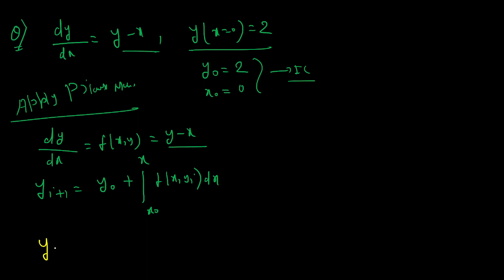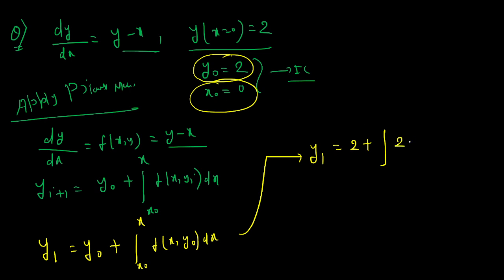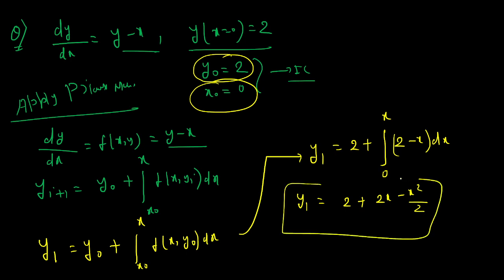To calculate y₁: y₁ = y₀ + integral from x₀ to x of f(x, y₀) dx. Here y₀ = 2, x₀ = 0, and f(x, y₀) = y₀ - x = 2 - x. So y₁ = 2 + integral from 0 to x of (2 - x) dx, which gives y₁ = 2 + 2x - x²/2.